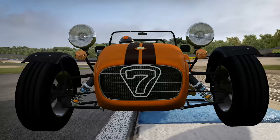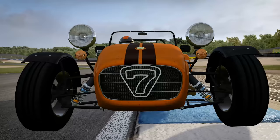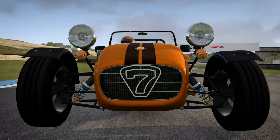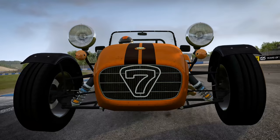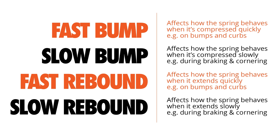Bump and rebound both have slow and fast settings as well, which means that each damper has four possible settings: slow bump, fast bump, slow rebound, and fast rebound. Intuitively, the slow settings control the damping when the spring moves slowly, and the fast settings when the spring moves quickly. For example, the slow bump setting controls how the spring behaves when it's compressed slowly, and the fast rebound setting affects the behaviour of the spring when it extends quickly.